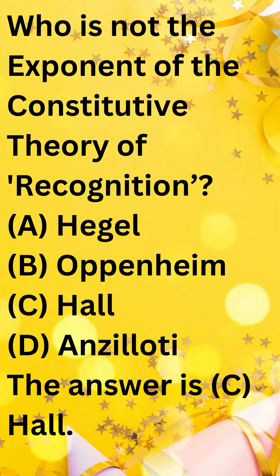Hall. Hegel, Oppenheim, and Angelotti are all chief exponents of the constitutive theory of recognition. This theory holds that the existence of a state is not automatic and depends on the consent of other states. Hall, on the other hand, is a proponent of the declaratory theory of recognition. This theory holds that recognition is simply a declaration of an existing fact,